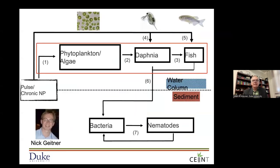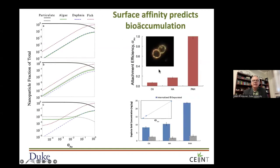We've modeled this system and looked at the effect of the relative affinity of a nanoparticle. In a simple food chain where algae are eaten by daphnia, which are eaten by fish, the initial affinity of the nanoparticle for the algae is well predicted by the attachment efficiency — the relative affinity of the nanoparticle for that surface. We could modify silver nanoparticles with citrate, humic acid, or an amine group and then look at the relative concentrations occurring through the food chain.